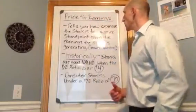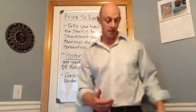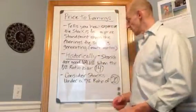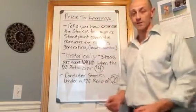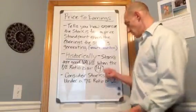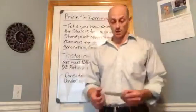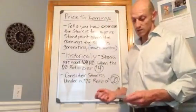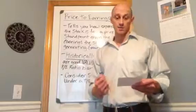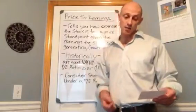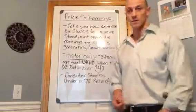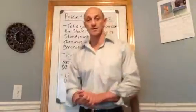That's pretty much it with price to earnings ratios. The lower the better when it comes to PE ratio numbers — if you can get below 14, that's even better. The ratio can be calculated by dividing the stock's price by the earnings per share being generated. That's pretty much it for price to earnings ratios.